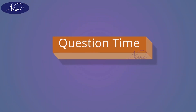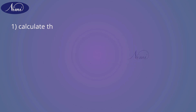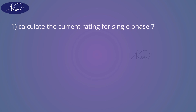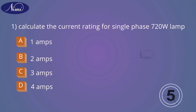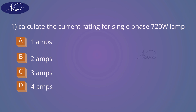Question time. Question number one: Calculate the current rating for a single-phase 720 watt lamp. Option A: 1 amp. Option B: 2 amps. Option C: 3 amps. Option D: 4 amps. And the answer is C — 3 amps.